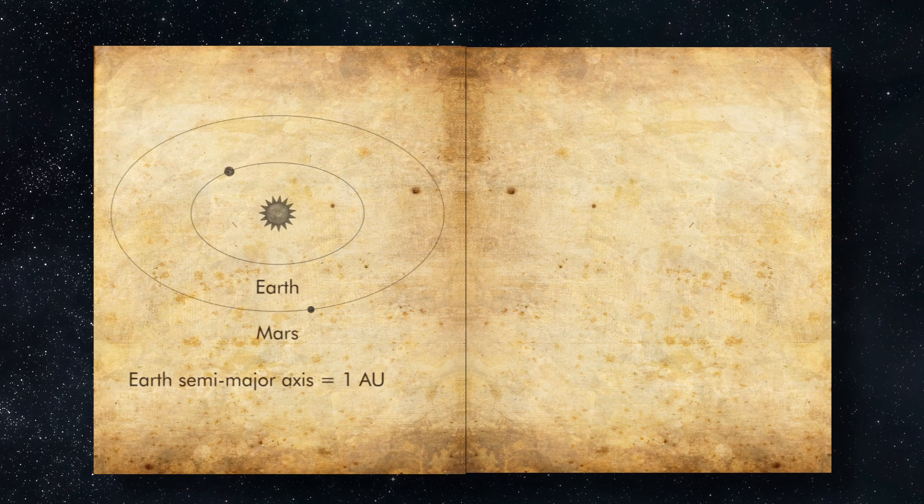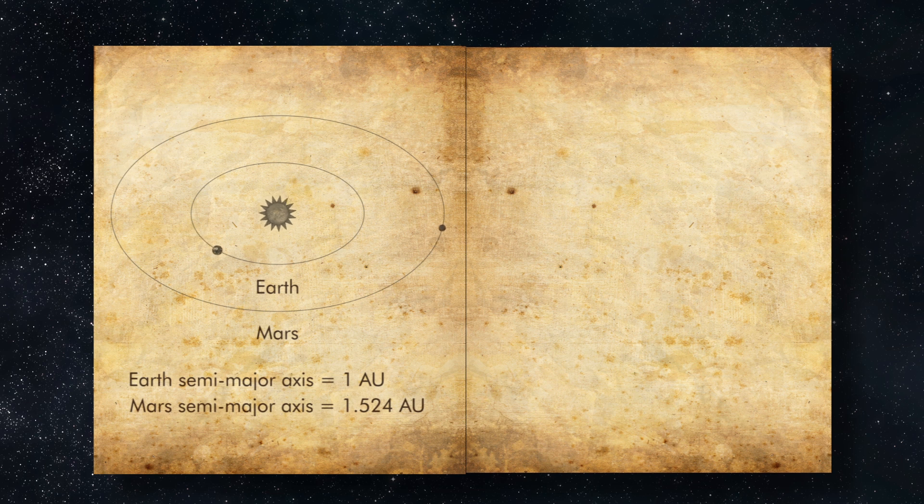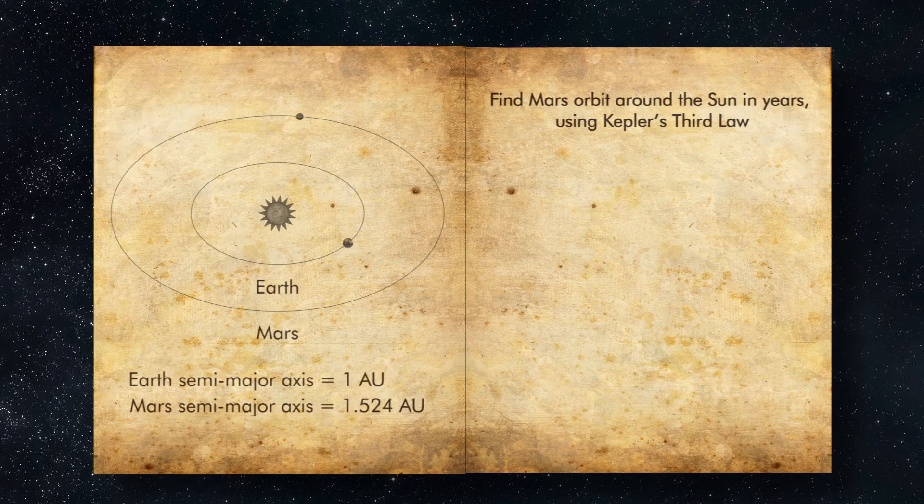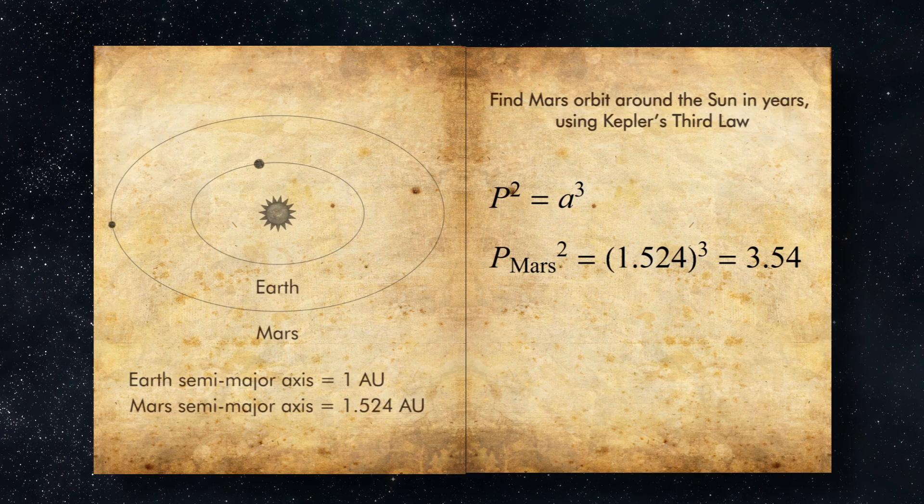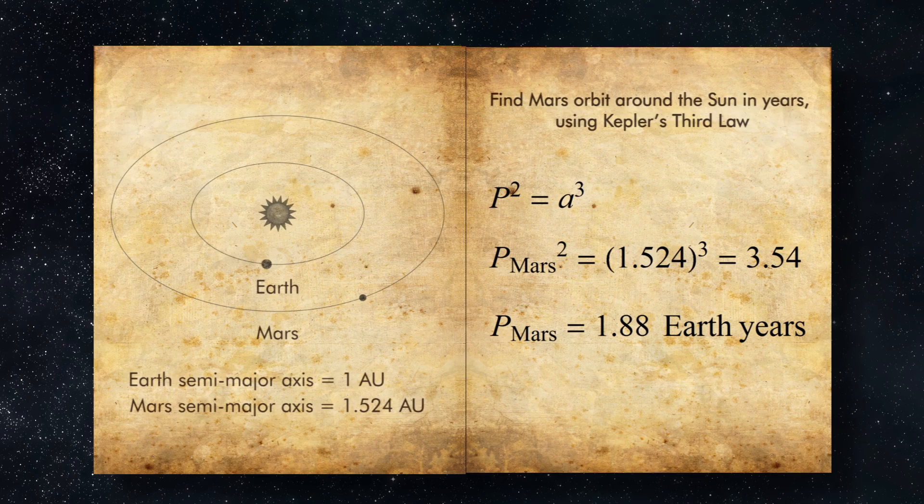Let's try it out. Earth's semi-major axis is 1 AU, because that's the definition of an astronomical unit. Mars is farther from the Sun. It has a semi-major axis of 1.524 AU. We can use Kepler's third law to figure out how long it takes Mars to complete one orbit around the Sun. That is, how many Earth years make up one Mars year.